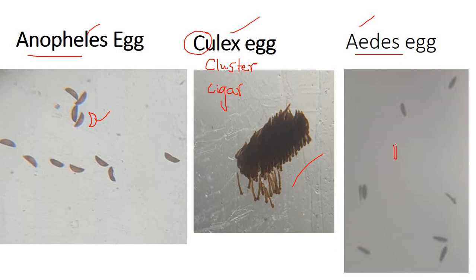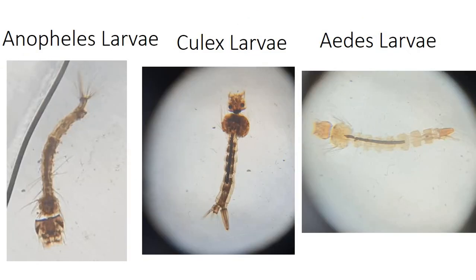When the egg is oval-shaped with lateral floats — air filled to help it float — it is Aedes. Anopheles is a surface feeder, so it has these lateral floats. Once it becomes a larva, it has no siphon tube and floats parallel to the water surface. Culex and Aedes are bottom feeders. We now move to larvae identification.